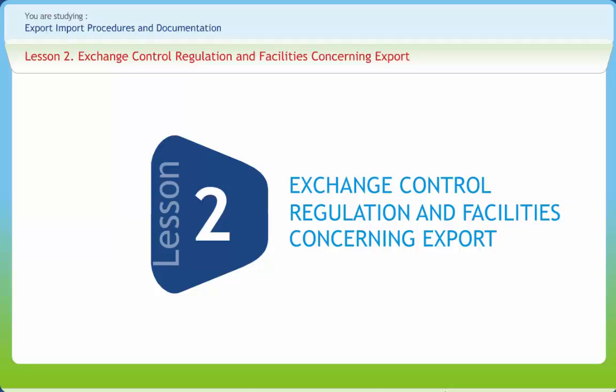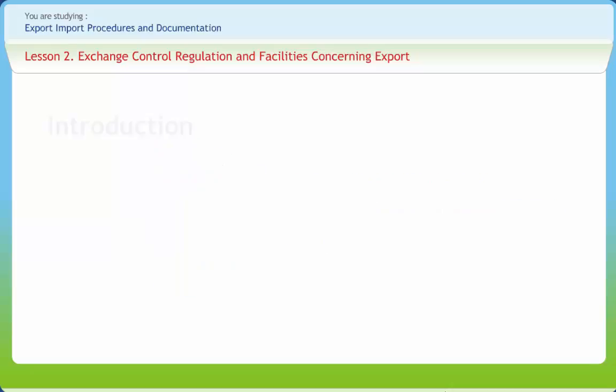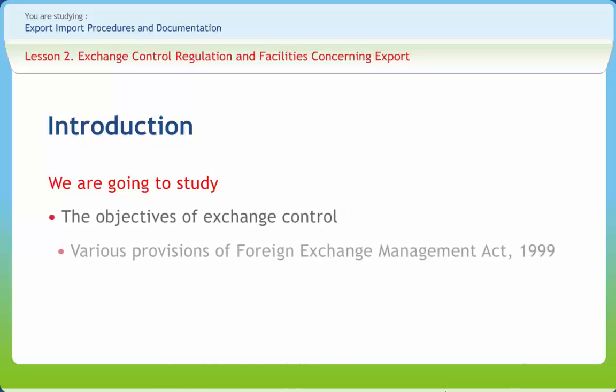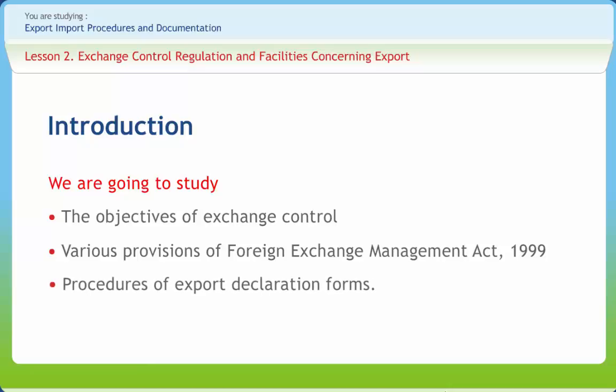Exchange Control Regulation and Facilities Concerning Export. Exchange control applies to the rules and regulations designed to regulate transactions involving foreign exchange. The objective of exchange control is primarily to regulate the demand for foreign exchange for various purposes within the limits set by available supply. In this lesson, we will learn the objectives of Exchange Control and various provisions of the Foreign Exchange Management Act 1999 related to regulation and management of foreign exchange and procedures of export declaration forms.